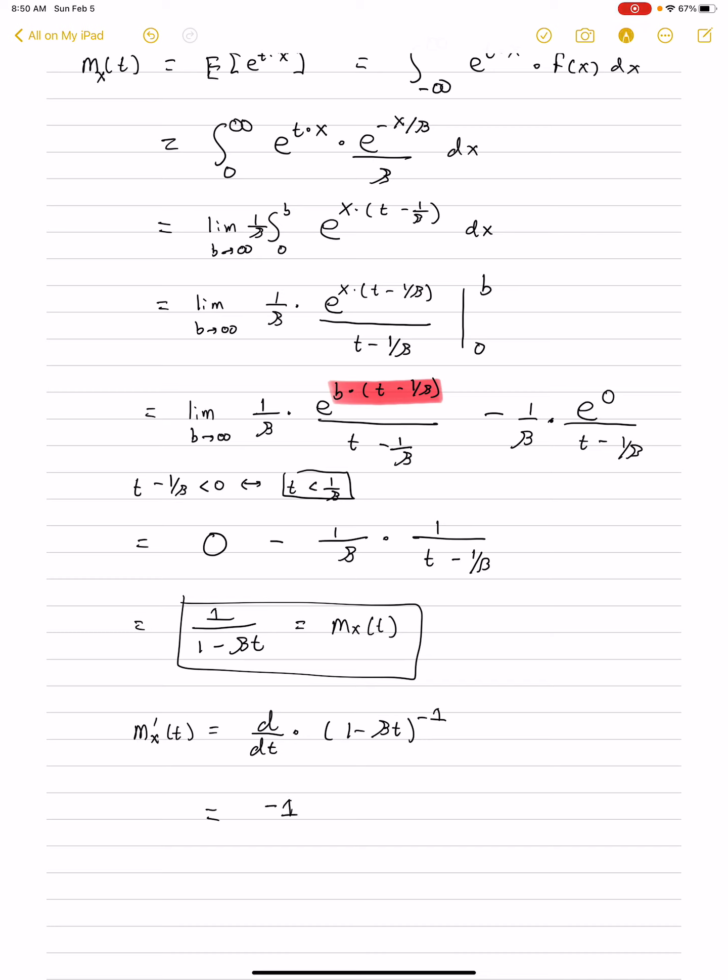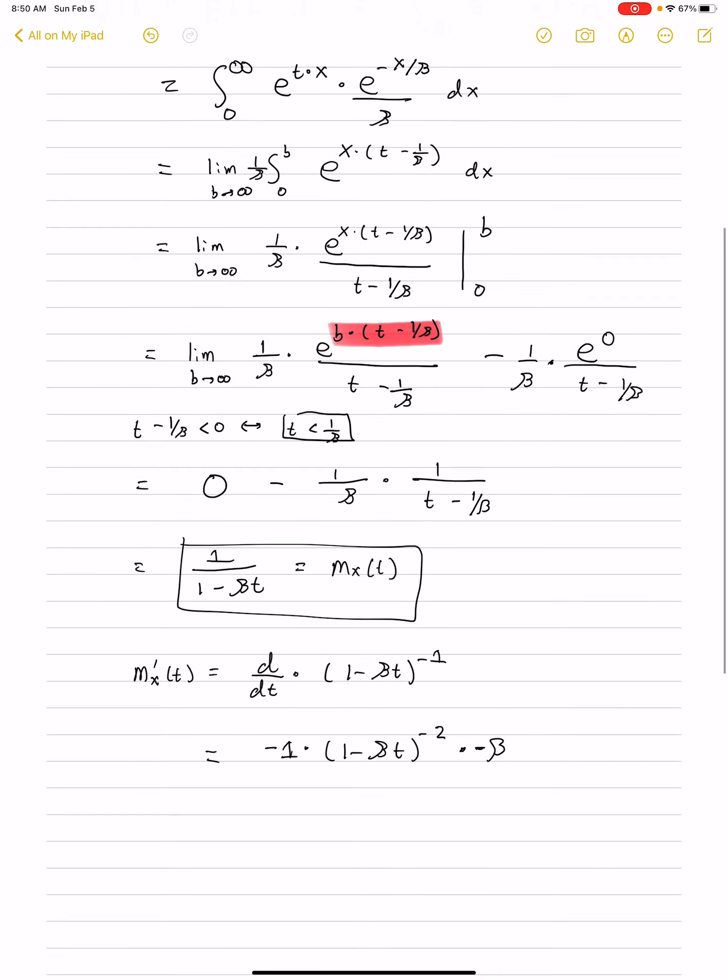And we'll bring down the minus 1 power for the chain rule. That will make it a negative 2. We multiply by the derivative of what's inside. That is beta. And excuse me, I believe it's a negative beta. Yes, it is. And just simplifying this, the negatives cancel. You get beta over 1 minus beta t squared.